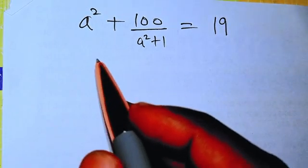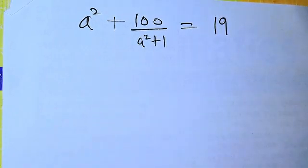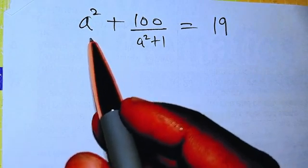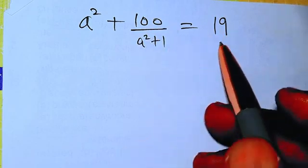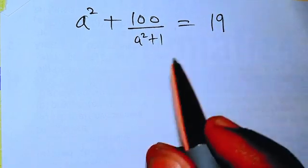Hello good viewers, let's see how we are going to solve this problem here. We want to know the value of a in this equation: a squared plus 100 over a squared plus 1 equals 19.